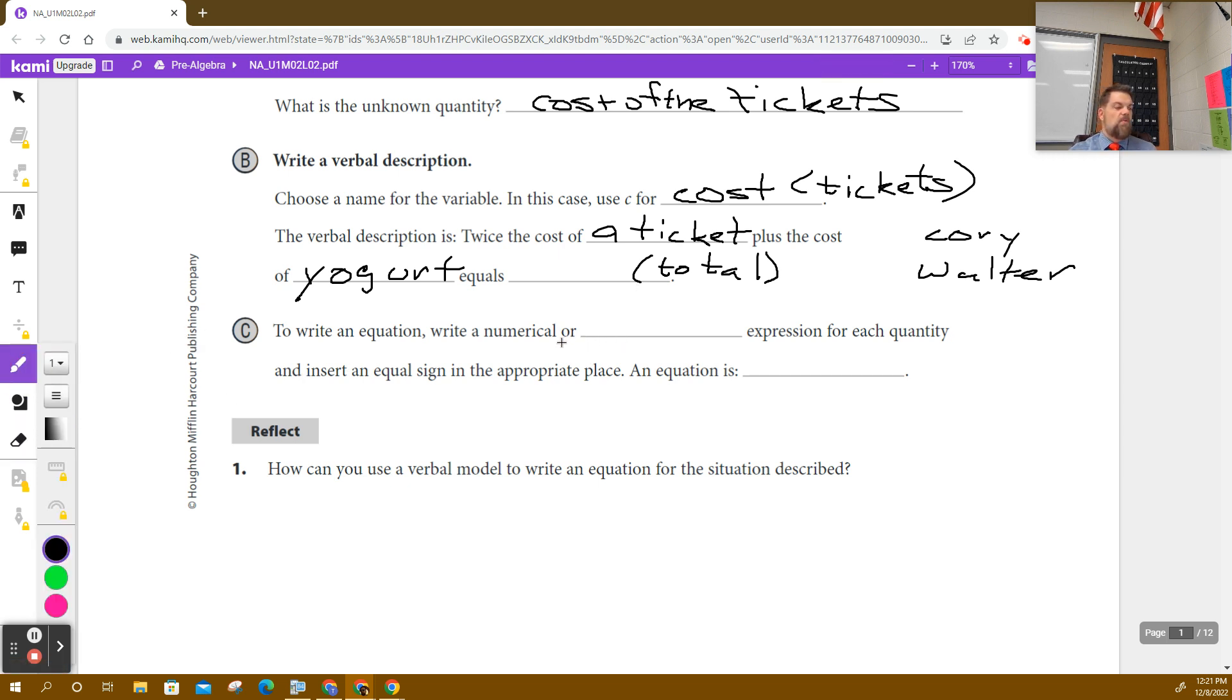So we're going to write a numerical expression or an algebraic expression because one of these things we don't know. So if it's just numbers, it's just a numerical expression. This plus this plus this equals $19.90. But since we don't know the cost of the tickets, it's going to be something C plus something equals $19.90. And then insert the equal sign in the appropriate place. So what would you say the equal sign would be? How would you write that? Well, it's two times the cost of the tickets. How much did they spend for yogurt? $19.90. Which is pretty cheap for two yogurts. And that, their total bill was $19.90.